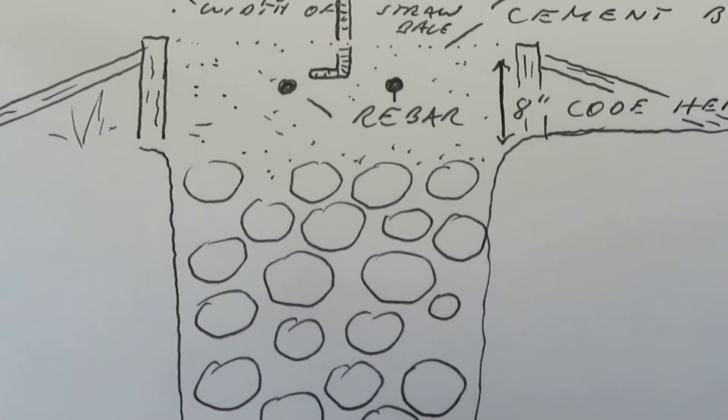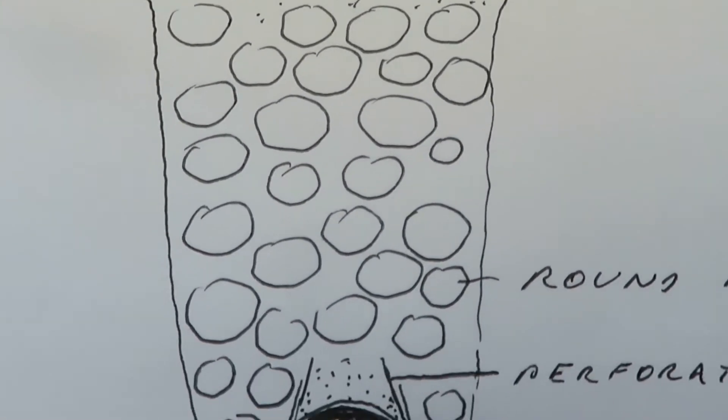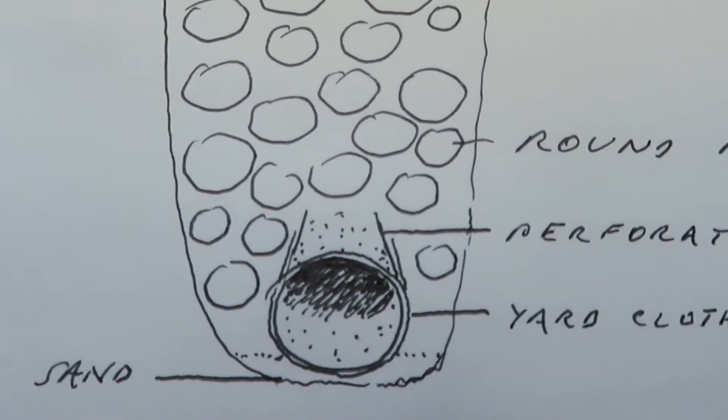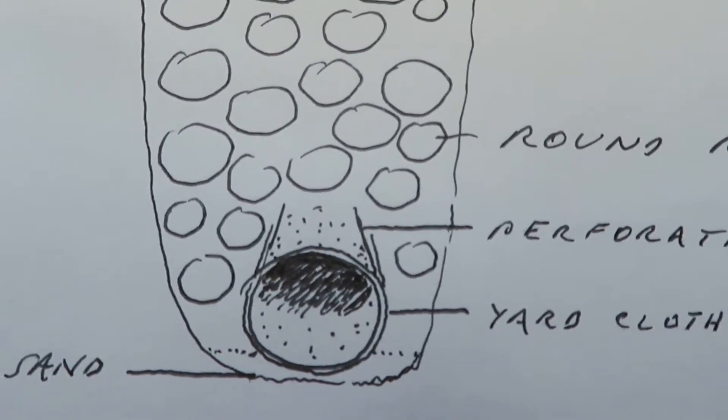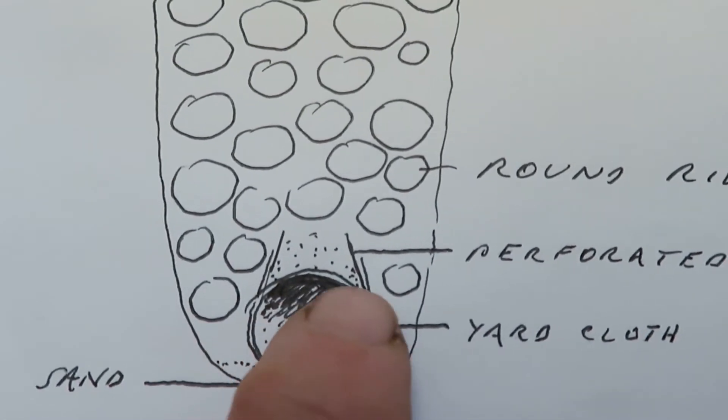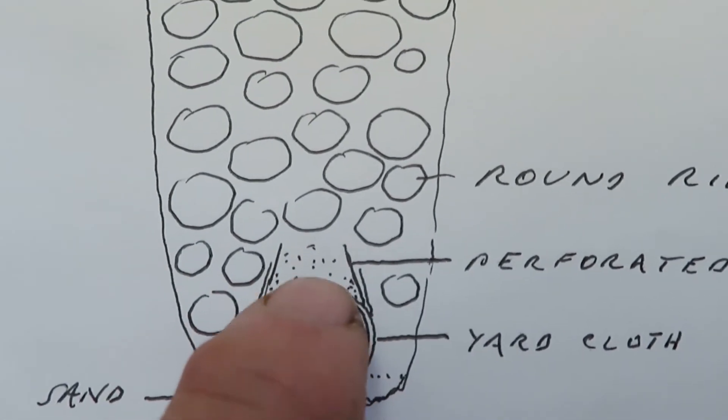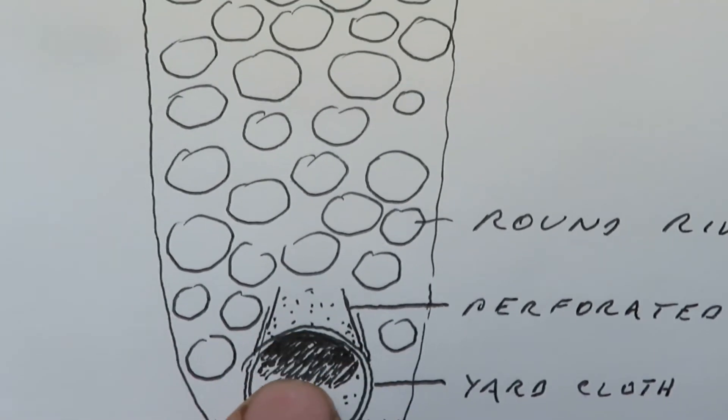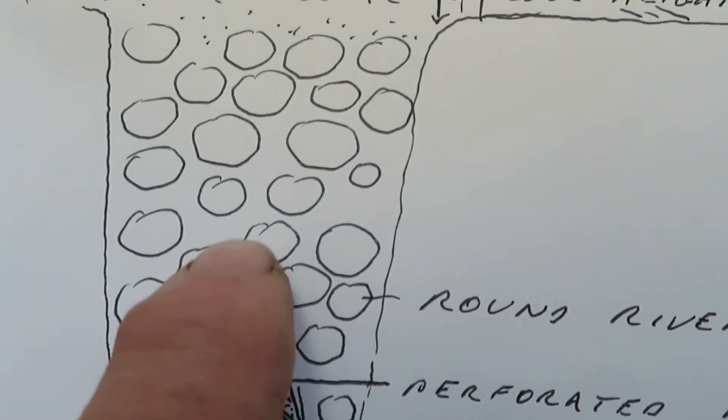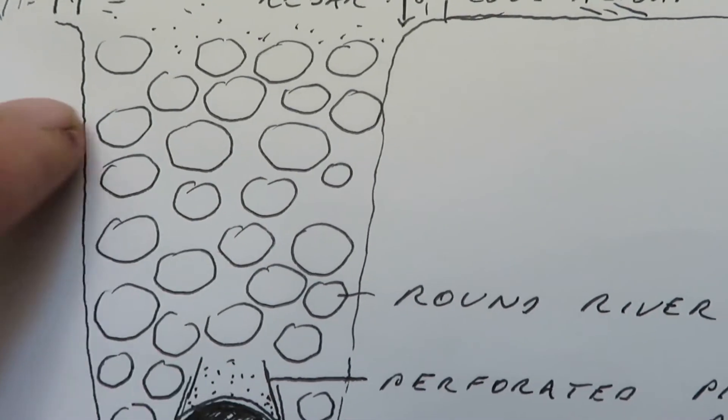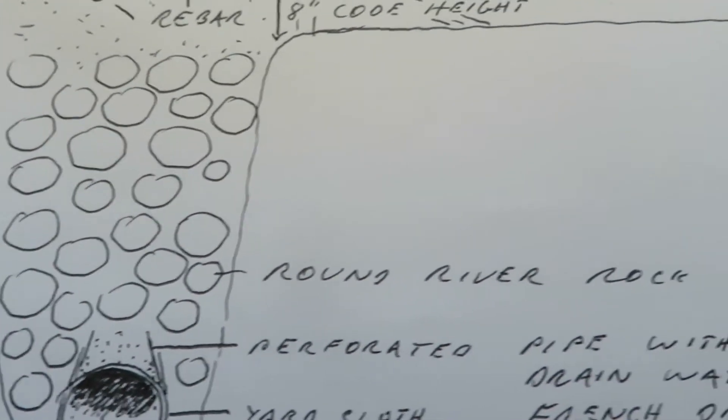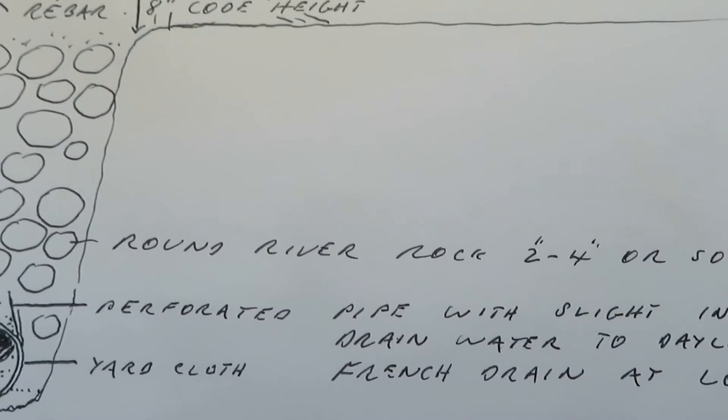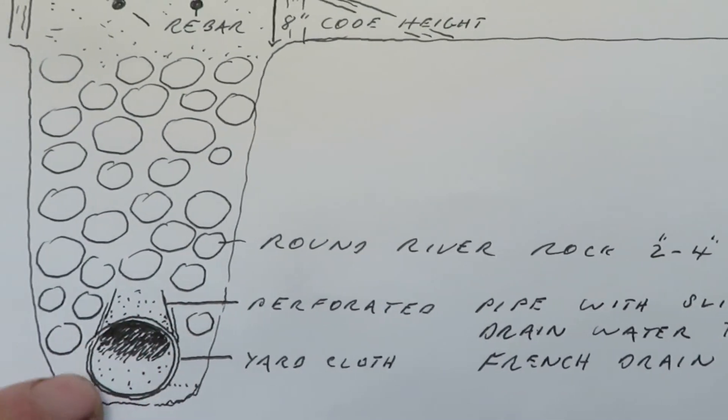This perforated pipe was inclined down so that it would see daylight outside the house. The yard cloth was placed around that to keep particles of sand from getting into the perforated pipe.